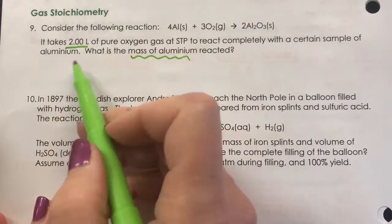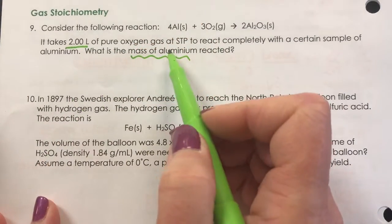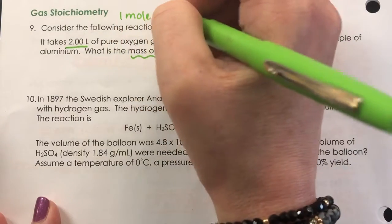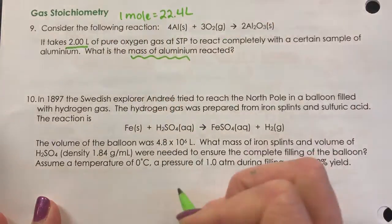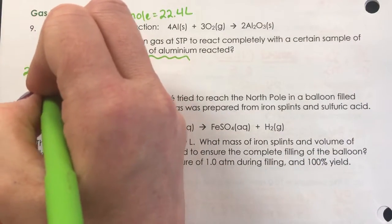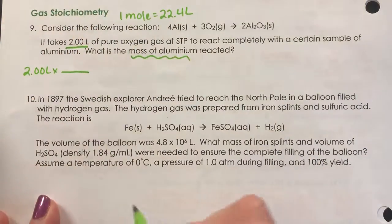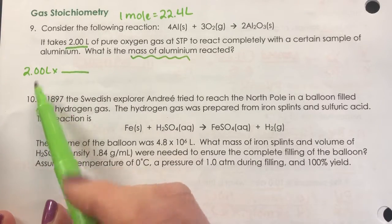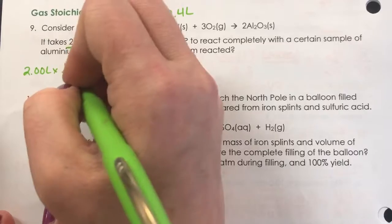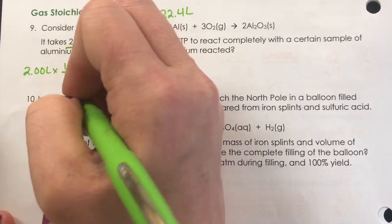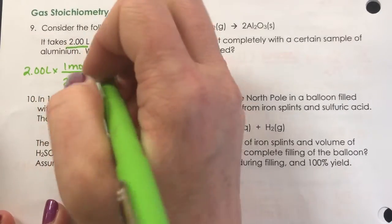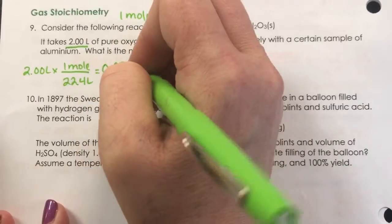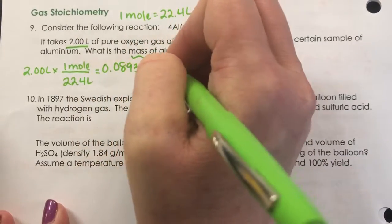When we're given a gas volume at STP, we have this relationship that one mole of the gas occupies 22.4 liters. So if we start with the two liters of oxygen, I know in a traditional stoichiometry question the first thing we have to do is change the given to moles. So we would do so with one mole over 22.4 liters, which means we have 0.0893 moles of the oxygen.